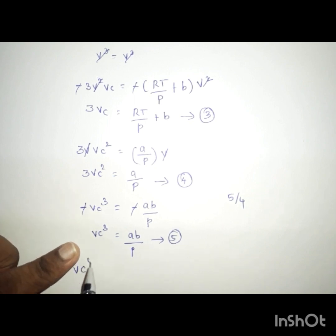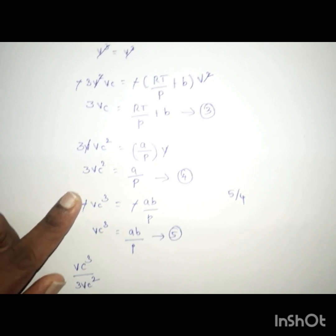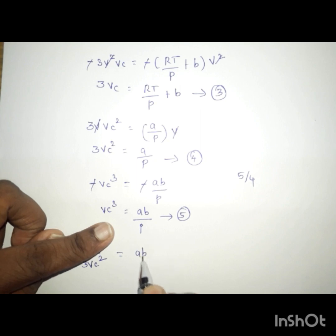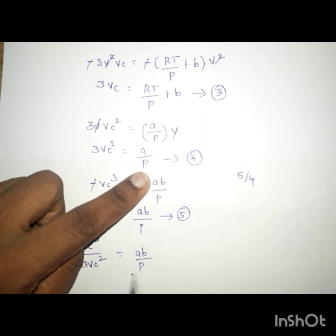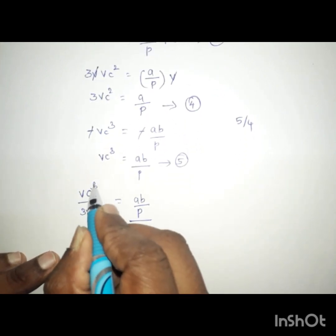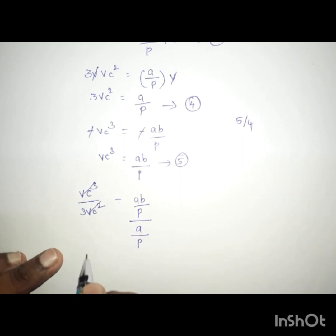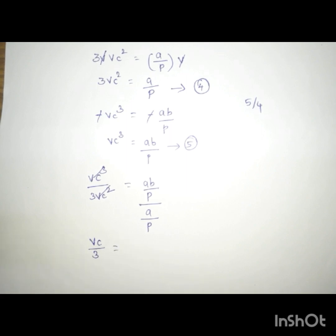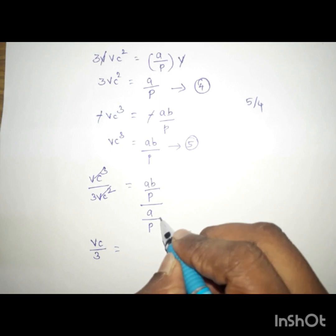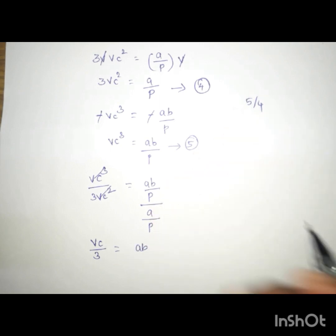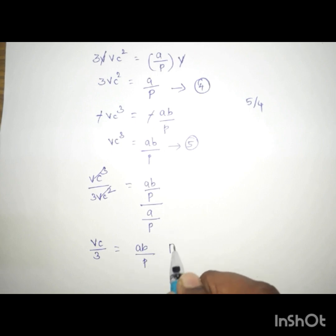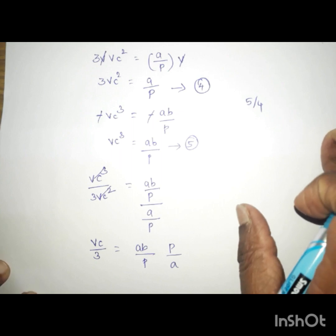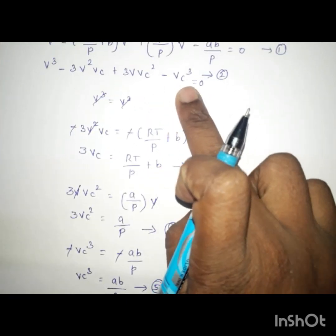From equation 5: Vc³ divided by 3Vc² gives the fourth term as a·b divided by Pc, and the fourth term is a divided by Pc. So combining these equations we can solve for the critical constants.